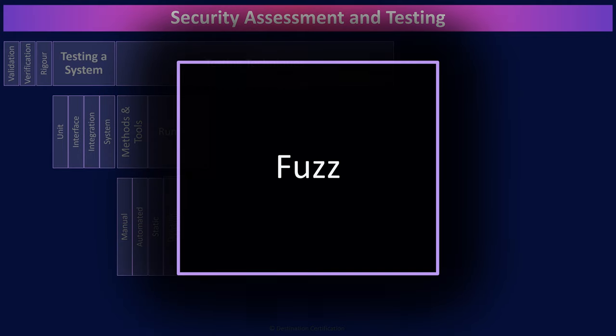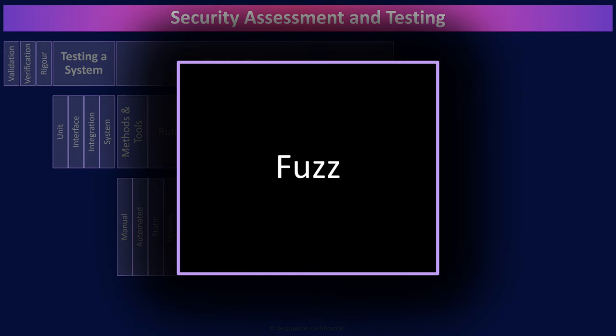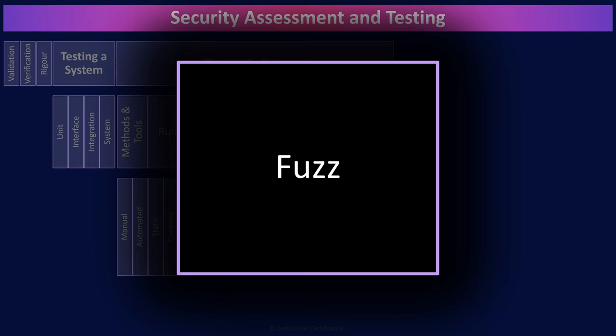Fuzz testing is a form of dynamic testing. It is essentially the idea that programmers are logical people. They expect logical input and that it provides logical output. If you throw chaos at a system, massive amounts of random data, random input, then you can identify all sorts of unexpected errors and vulnerabilities in code.